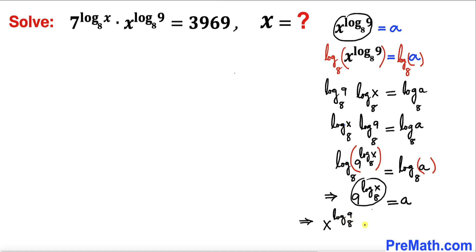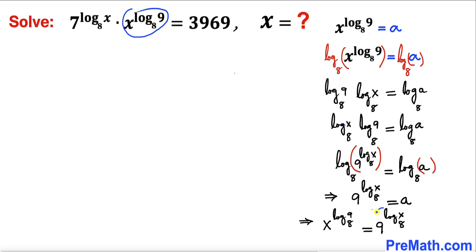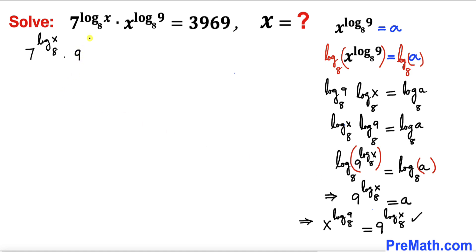Now we can see that the first equation gave x to the power log of 9 with base 8 equal to a, and this new equation gives 9 to the power log of x with base 8 equal to a as well. Therefore we conclude that x to the power log of 9 with base 8 equals 9 to the power log of x with base 8. I am going to replace that in our original equation, so it becomes 7 to the power log of x with base 8 times 9 to the power log of x with base 8 equals 3969.